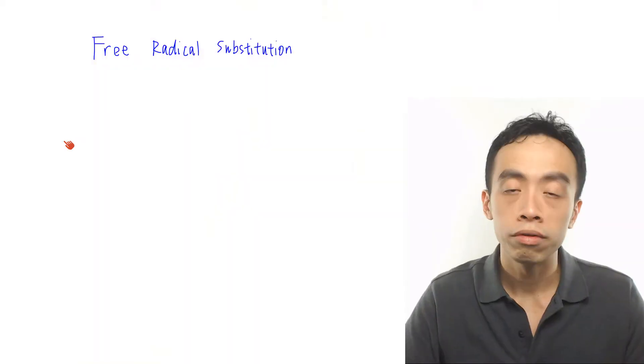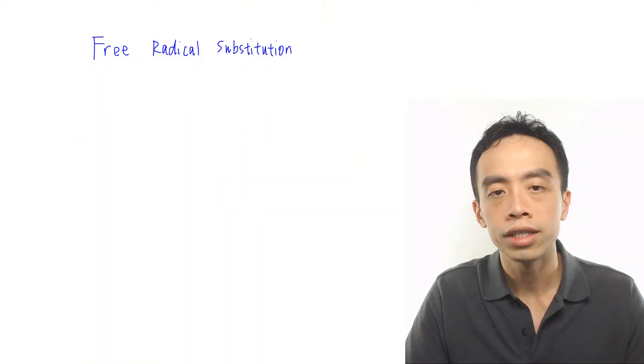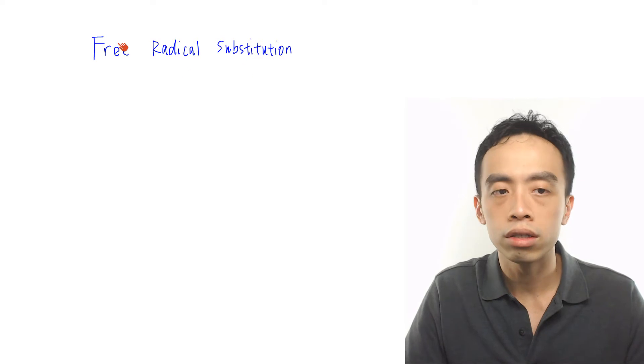Hi everyone, this is Marifik Pua, the chemistry guru. Now in this video, we want to go through drawing the mechanism of alkanes, which is our free radical substitution. Now describing the mechanism is a very important component of organic chemistry in A-levels, so we need to be able to describe it in detail. Now before we jump in and describe the mechanism, let's look at this phrase: free radical substitution.